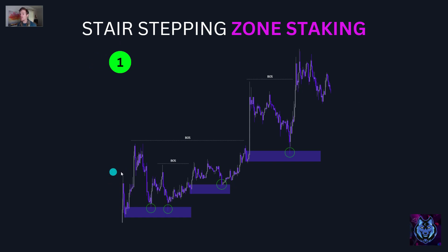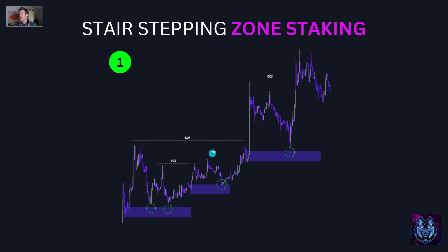Number one: price broke the structure, left behind a zone, came back down, tapped into that zone — this would have been the entry. Came back up, created liquidity up here which we know it's going to break, came back down, tapped into that zone again — we could have entered again. Then price proceeded upwards, broke structure, leaving behind another zone on this break in structure. Wait for price to come back to the zone — and there is another entry. Then price proceeds to move up with this massive institutional candle, breaks this whole structure, leaves behind a zone. Wait for price to come back into that zone and it becomes another entry, and it breaks the structure again.